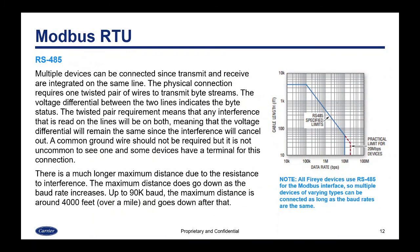Next we have RS-485. Multiple devices can be connected since transmit and receive are integrated on the same line. The physical connection requires one twisted pair of wires to transmit byte streams. The voltage differential between the two lines indicates the byte status. The twisted pair requirement means that any interference read on the lines will appear on both lines, so the voltage differential will remain the same since the interference will cancel out. A common ground wire should not be required but it is not uncommon to see one, and some devices do have a terminal for this connection.